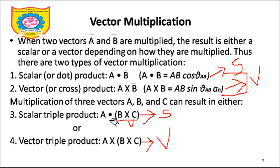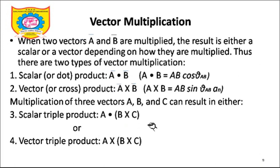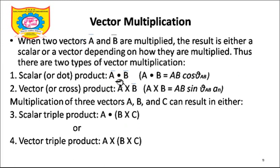Basically there are four types of multiplication. Let's look at the dot product first. In the dot product, how do we represent it? A̅ dot B̅ is equal to mod of A̅ into mod of B̅ into cos of theta between A̅ and B̅.